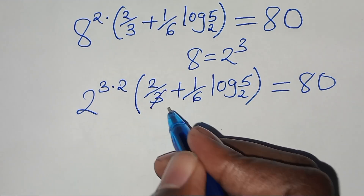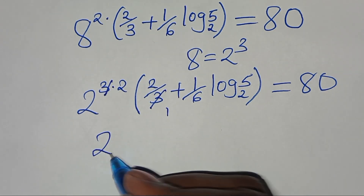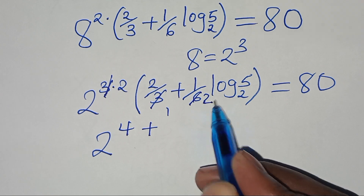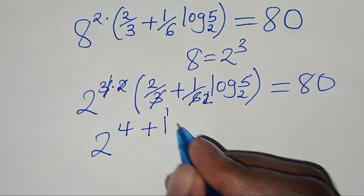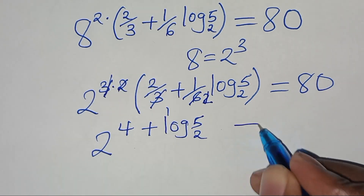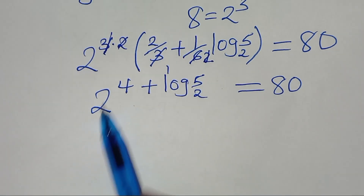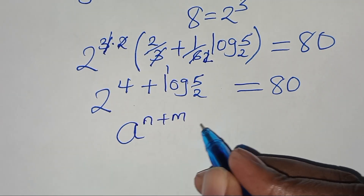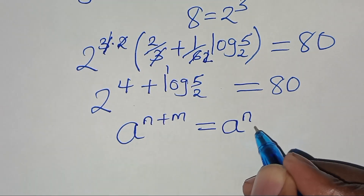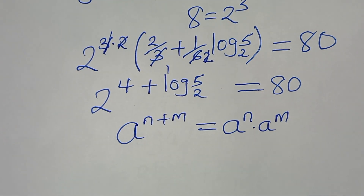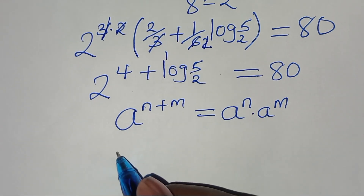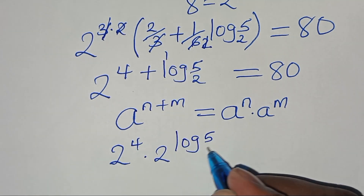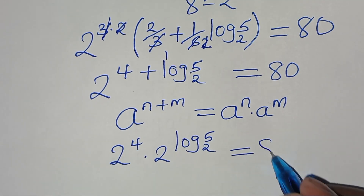Simplifying: 3 and 3 cancel so we have 2 raised to the power 2 times 2, which is 4, plus 3 and 3 cancel again giving (1 over 2) times log base 2 of 5 — wait, simplifying carefully gives 2 to the power 4 plus log base 2 of 5. This is in the form of a to the power n plus m, which equals a to the power n times a to the power m, so applying this exponent property: 2 to the power 4 times 2 to the power (log base 2 of 5), and this should equal 80.